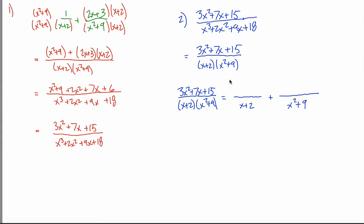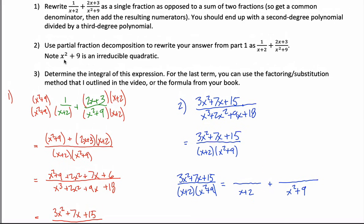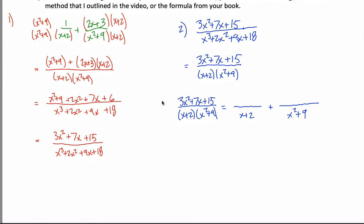Note that x squared plus nine is irreducible — you can't factor it any further. Since x plus two is a linear factor, we put just an A on top. Since x squared plus nine is a quadratic factor, we need Bx plus C over it. The logic is this left side equals the right side, which will be something we can deal with when we do the calculus in step three. To solve, multiply both sides by x plus two times x squared plus nine.